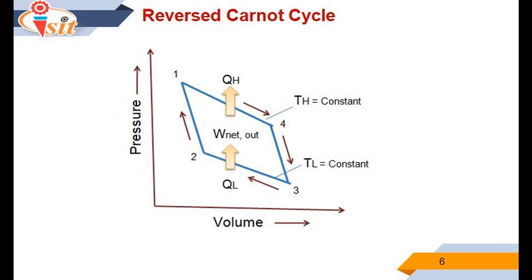The next important point is the Reverse Carnot cycle. The Carnot heat engine cycle just described is totally reversible; therefore all the processes that comprise it can be reversed, in which case it becomes the Carnot refrigeration cycle. The cycle remains exactly the same except the directions of all heat and work interactions are reversed. Heat in the amount of QL is absorbed from the low temperature reservoir, heat in the amount of QH is rejected to the high temperature reservoir, and a work input of W_net is required to accomplish all these. The PV diagram of the Reverse Carnot cycle is the same as for the Carnot cycle, except the direction of processes is reversed.